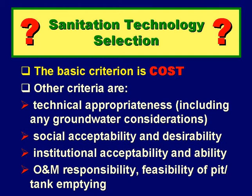The local institution, whether it's a water and sewerage authority or an environmental health department of the local council, has to agree to the choice and, very importantly, has to be able to do any operation and maintenance, or at least offer advice to the householders if O&M is to be left to them. And if we are going to select an on-site system — a VIP latrine or pour flush toilet, for example — then pit emptying has to be considered now and not in ten years' time when the pits are full.